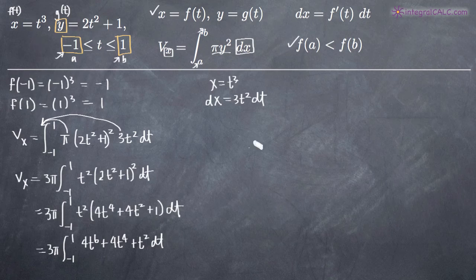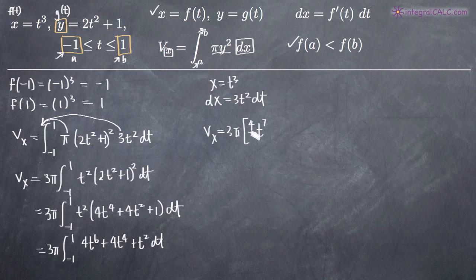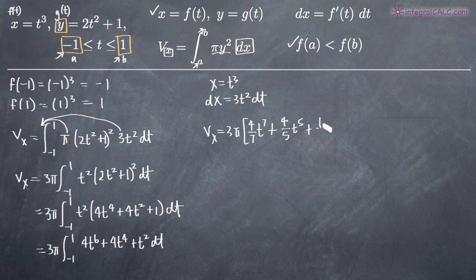Now we can easily take the integral. Volume of revolution around the x-axis equals 3 pi times the antiderivative. Adding 1 to the exponent and dividing the coefficient by the new exponent: 4t to the 6th becomes 4 7ths t to the 7th; 4t to the 4th becomes 4 5ths t to the 5th; and t squared becomes 1 3rd t cubed. We evaluate that over the range negative 1 to positive 1.